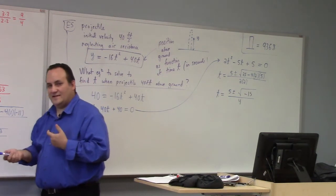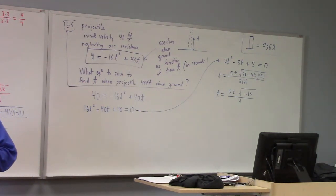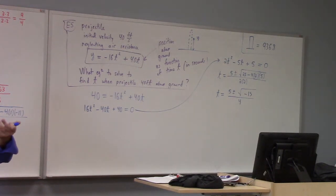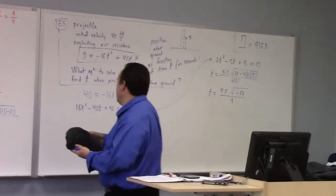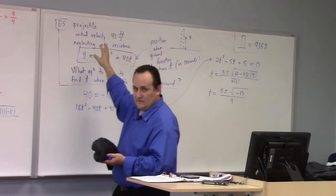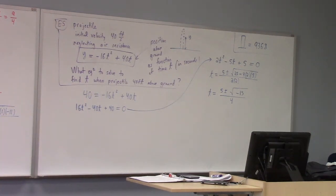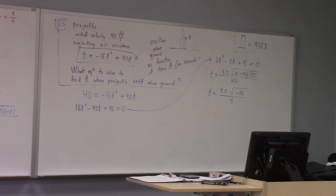There is a difference between this class and your physics class after this — I don't expect you to set up the formula for position as a function of time. In physics, that's part of your job. Here we just give you the formula and you work with it. The problems I expect you to set up yourself are not based on an understanding of Newtonian physics — to set up that formula you need to know physics, which you may or may not know. What am I saying? That's not okay — everybody should know physics.